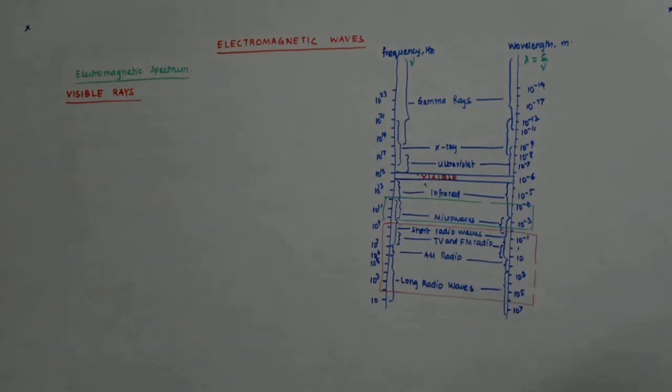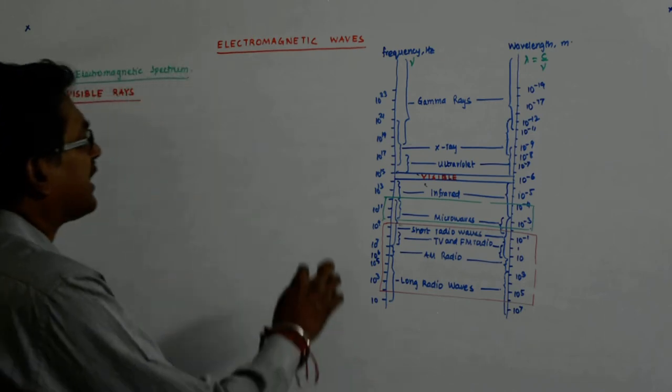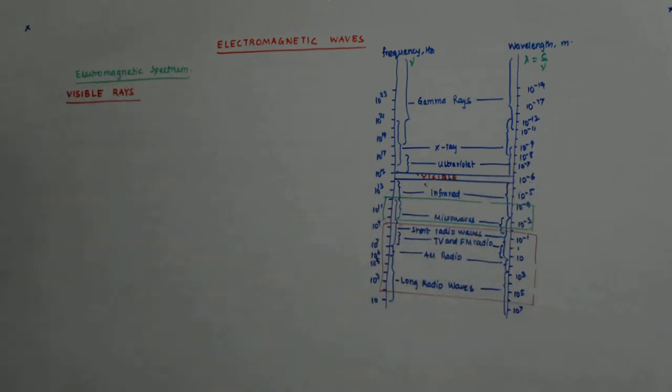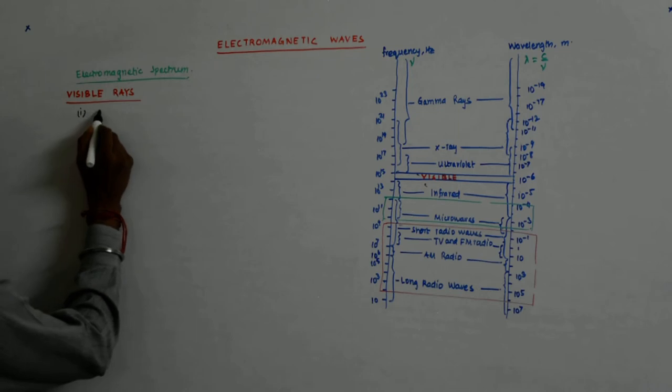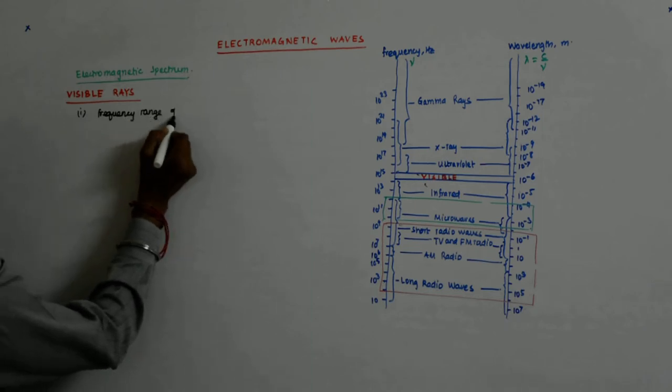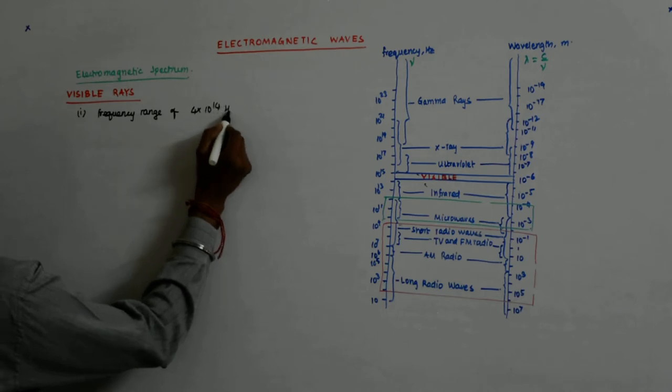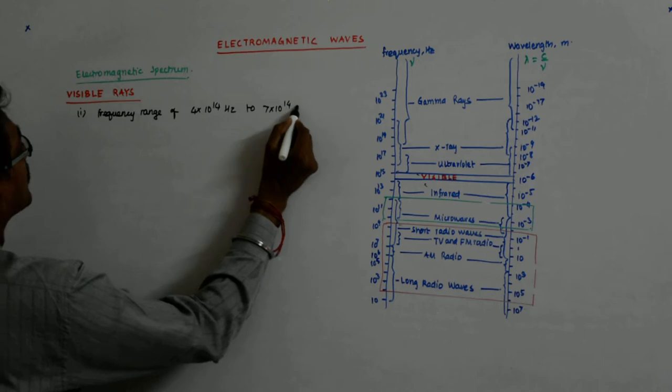Now we come to the visible range of light, and you'll be amazed to know that a very small spectrum is visible to us. The frequency ranges from only 4 into 10 to the power 14 Hertz to 7 into 10 to the power 14 Hertz.